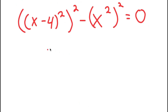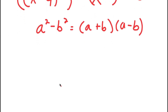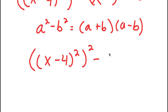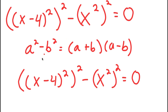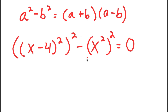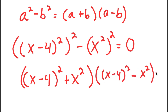Now I use the difference of squares property a squared minus b squared equals a plus b times a minus b. Here a is x minus 4 squared and b is x squared, so I get x minus 4 squared plus x squared, times x minus 4 squared minus x squared, equals 0.